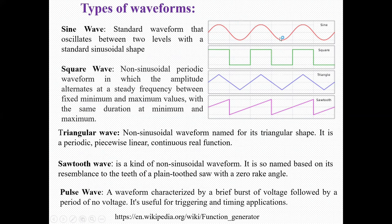This is the sine wave — it oscillates between two levels with a standard sinusoidal shape. This square wave is a non-sinusoidal periodic waveform in which the amplitude alternates at a steady frequency between fixed minimum and maximum values, with the same duration at minimum and maximum. Now the triangular wave is a non-sinusoidal waveform; it is periodic, piecewise linear, and a continuous real function.